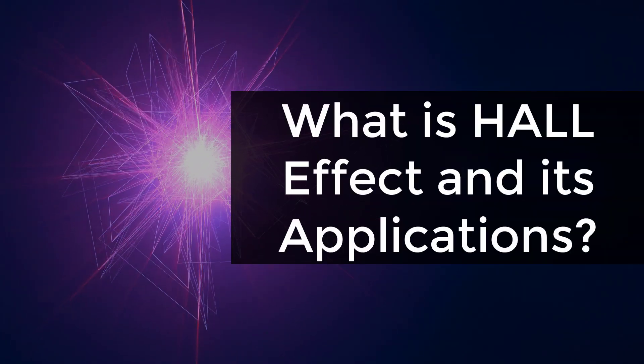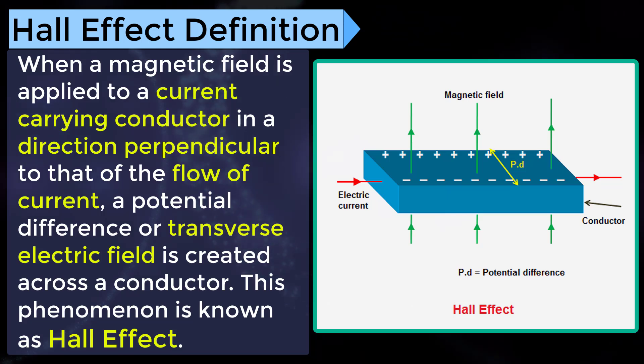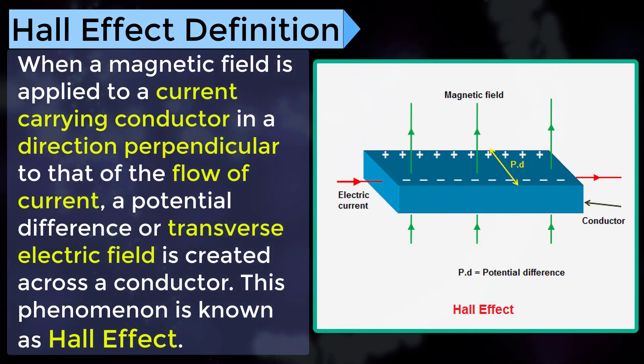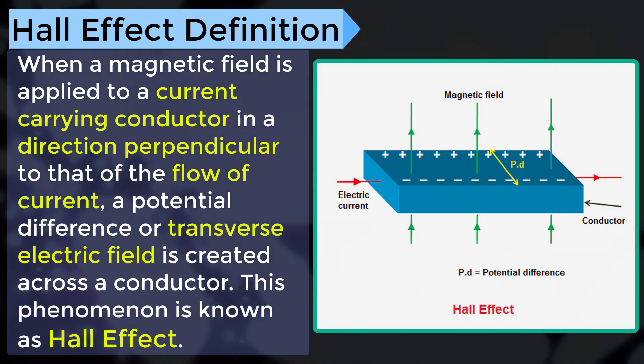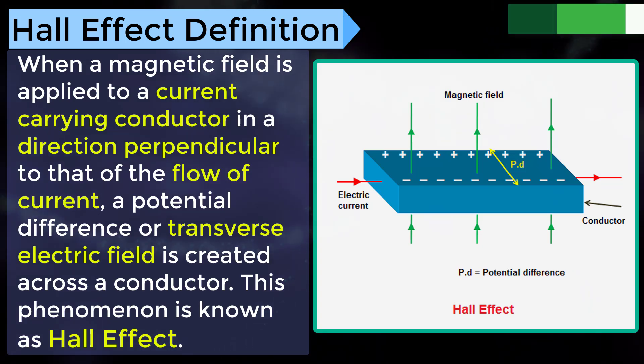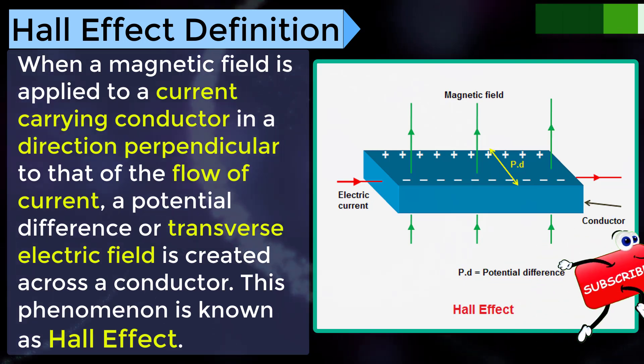What is Hall Effect and its applications? Hall Effect Definition: When a magnetic field is applied to a current-carrying conductor in a direction perpendicular to that of the flow of current, a potential difference or transverse electric field is created across a conductor.